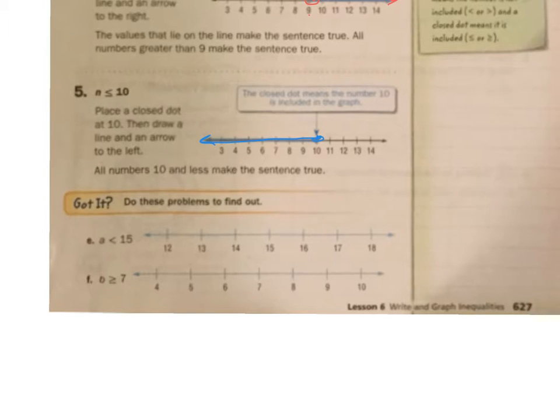A is less than 15. I'm going to put a circle around 15 because it's not 15, but it's everything less than 15 makes that a true statement. Okay, B is greater than or equal to 7, closed dot, and everything above it, greater than or equal to 7.